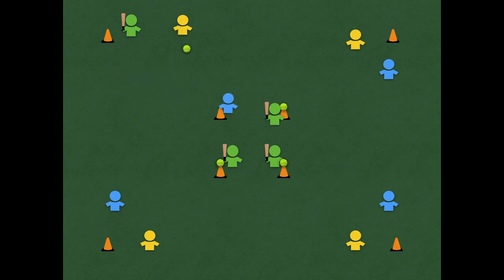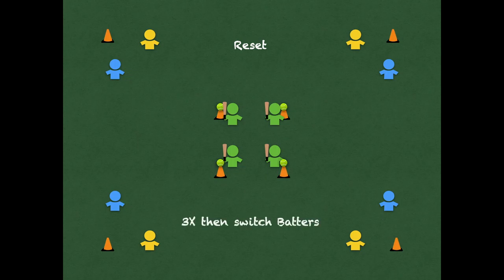They do that, they yell stop, the runner stops, they reset. We still repeat this three times for every batter before we switch who's batting and who's fielding.